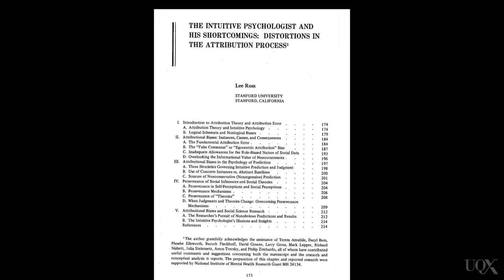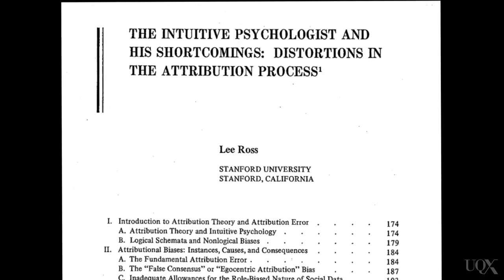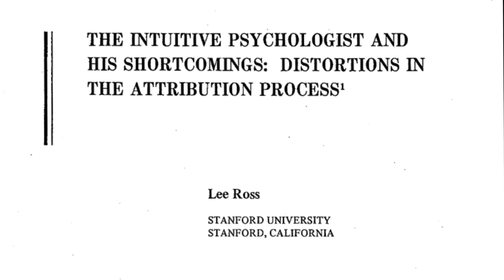The first one that we will talk about is also possibly the most pervasive one. This is the fundamental attribution error, which Ross described as the tendency to attribute another person's behaviour to his or her own dispositional qualities rather than to the situation that the behaviour is performed in. This is also known as the correspondence bias.